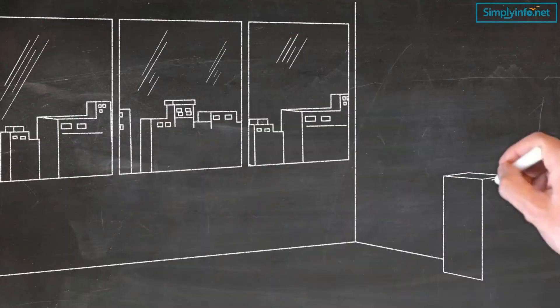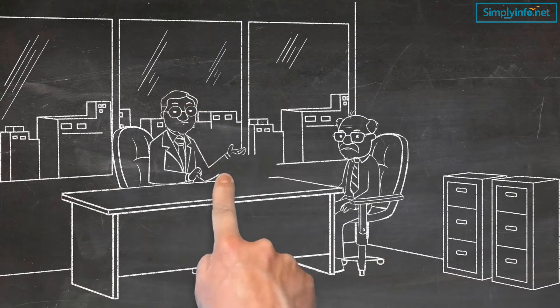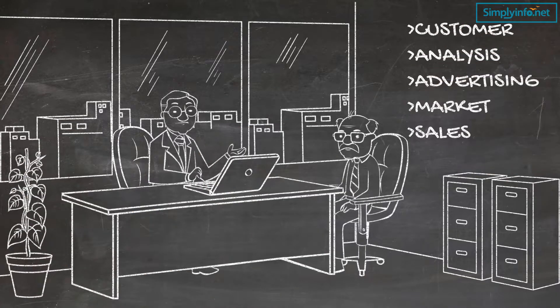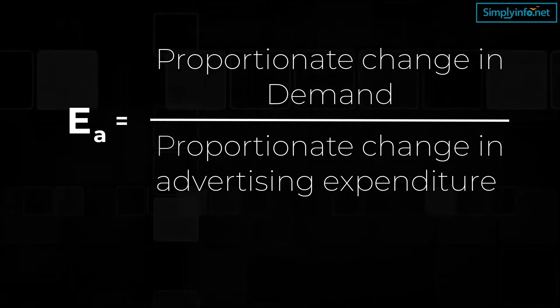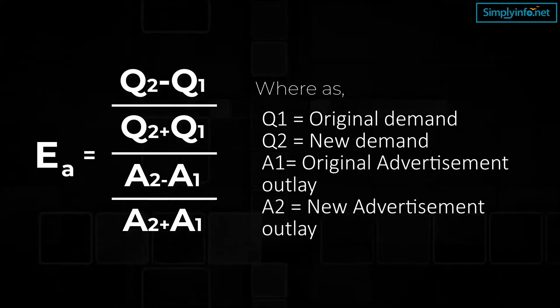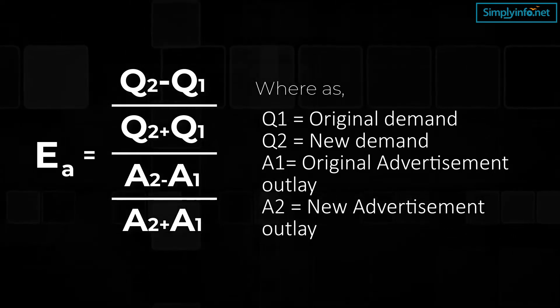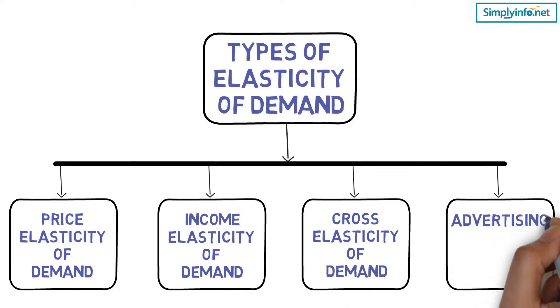Number 4: Advertising elasticity of demand. It is defined as the responsiveness of the change in demand to the change in advertising or promotional expenditure. It can be expressed as: EA = proportionate change in demand divided by proportionate change in advertising expenditure. Numerically, EA = (Q2 - Q1) / ((Q2 + Q1) / 2) divided by (A2 - A1) / ((A2 + A1) / 2), where Q1 is original demand, Q2 is new demand, A1 is original advertising outlay, and A2 is new advertising outlay. These are some of the important types of elasticity of demand.